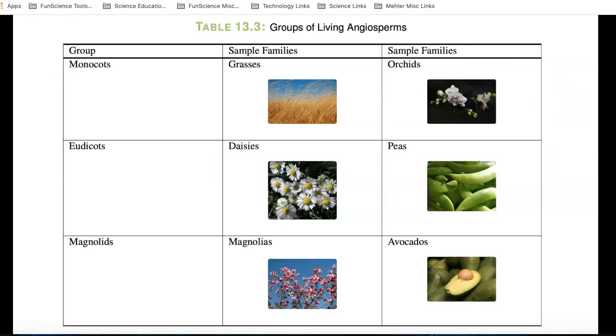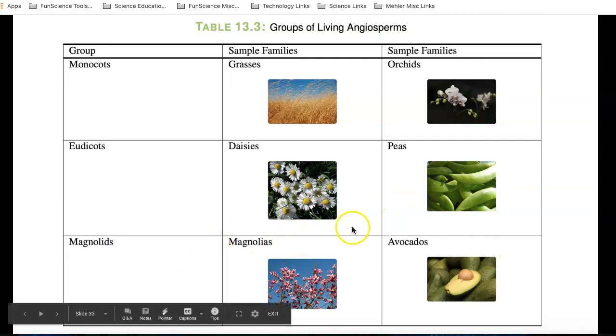Let's take a look at some of the groups of living angiosperms according to the structure of the flower. Monocots are like grasses and orchids. Eudicots, like daisies and peas. And magnolias, like magnolias and avocados.